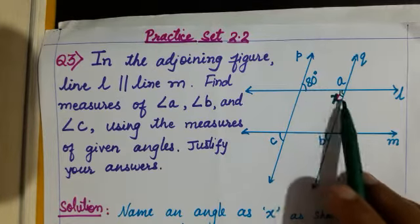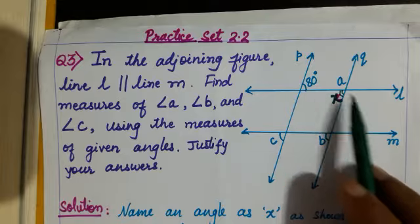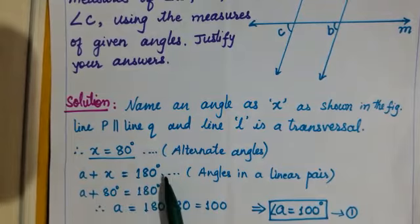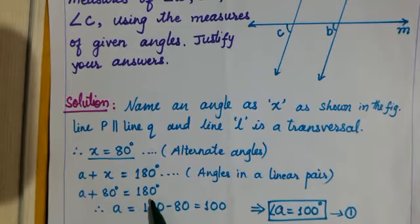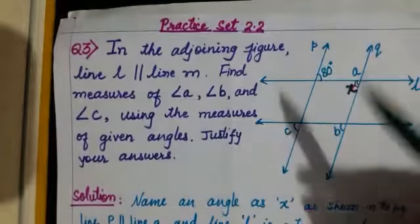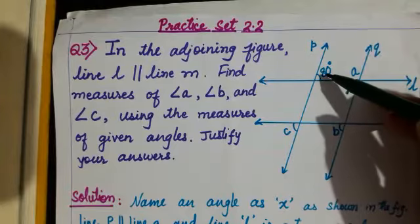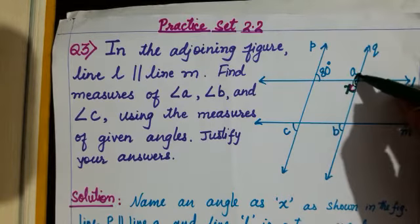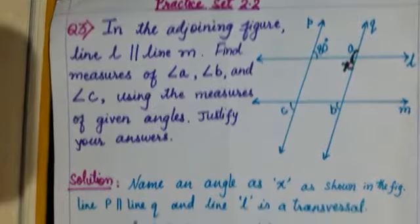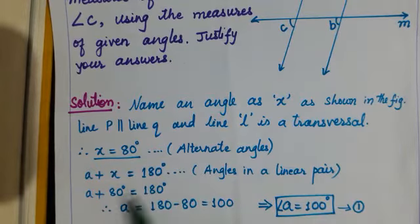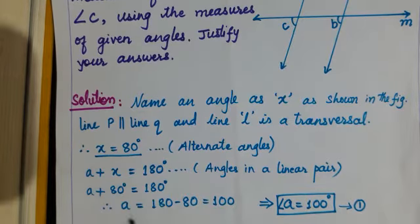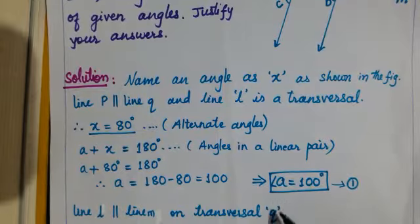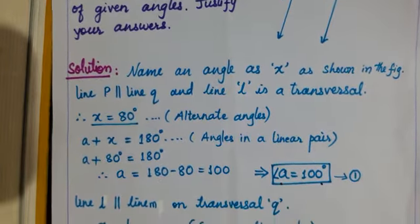Line p is parallel to line q and line l is a transversal. The given angle of 80° and angle x are alternate angles, so x equals 80°. Angle a and x form a linear pair, so a plus x equals 180°. Substituting x equals 80: a plus 80 equals 180, so angle a equals 100°.